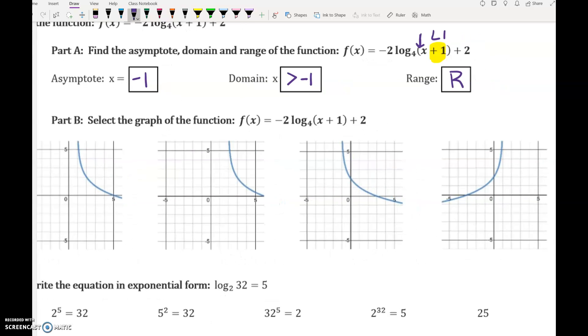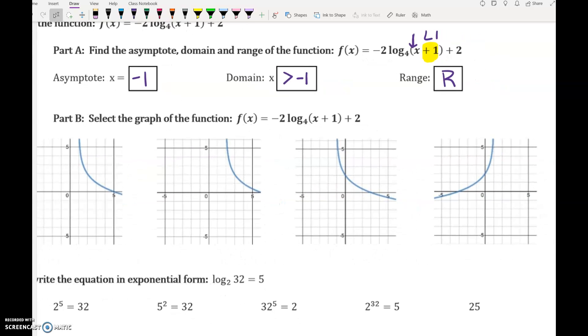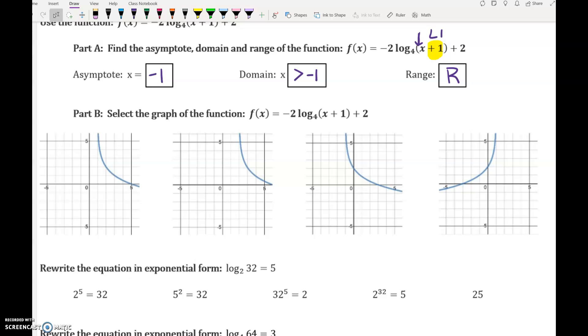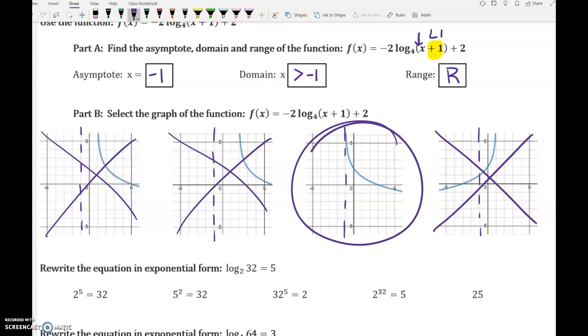Part B, you're selecting the graph of the function. The asymptote is supposed to be at negative 1. So what I would do is look at negative 1, x equals negative 1, on all of these graphs. Okay, this last graph crosses that asymptote, so that's definitely not right. These first two are farther away, so that's not right. This one is the correct one.